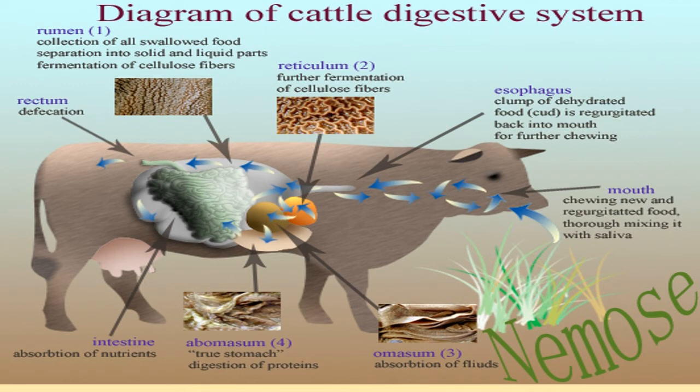Further fermentation is done in the reticulum, the second chamber. Then the cow regurgitates the food into the mouth and chews it — this is called chewing the cud. If you see a cow or buffalo sitting under a shed during the day, it will be chewing continuously, trying to break down the fibers of the grass and extract all the food from it. It does this multiple times between the first two sections. Only after it has broken the food down sufficiently does it send it into the omasum and then the abomasum, or the true stomach, where digestion takes place, followed by absorption of fluids.